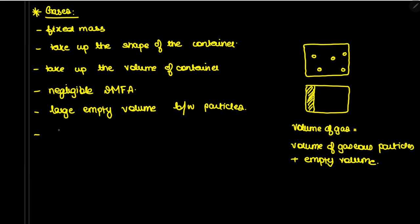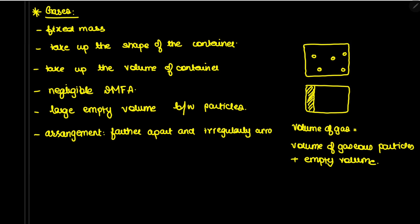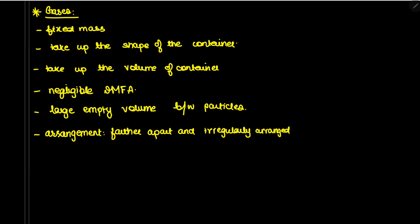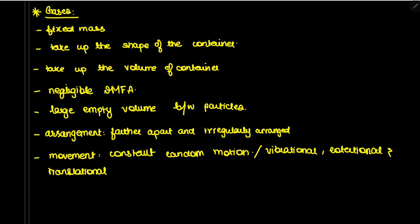In gases, the arrangement of particles: particles are farther apart and irregularly arranged. For movement of particles in gases, they are in constant random motion — or you can say vibrational, rotational, and translational movement.